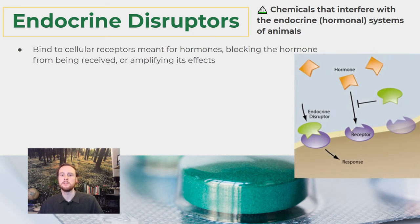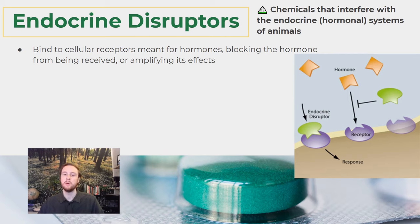First let's understand the mechanism of action — how they actually work. They are chemicals that mimic hormones, whether intentionally because they're a medication or unintentionally due to their chemical properties. This diagram is helpful for understanding how they work. The hormone in orange is supposed to bind to the receptor in purple, but the endocrine disruptor — the green molecule — comes in and binds to that receptor, blocking the hormone's action. In some instances it may actually amplify the effects, but the bottom line is that they disrupt the normal functioning of endocrine systems.